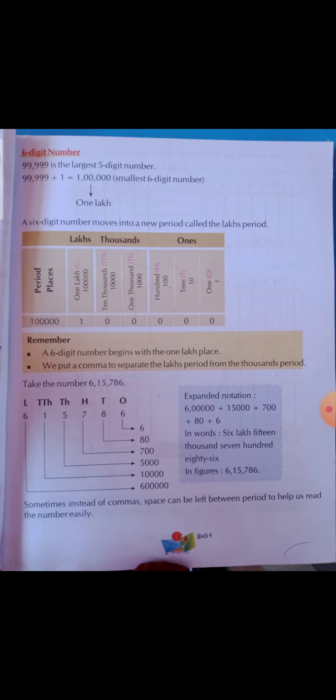So in the place value chart: six is in ones, eight is in tens, seven is in hundreds, five is in thousands, one is in ten thousands, and six is in lakhs. Six in ones gives us 6. Eight in tens gives us 80. Seven in hundreds gives us seven hundred.